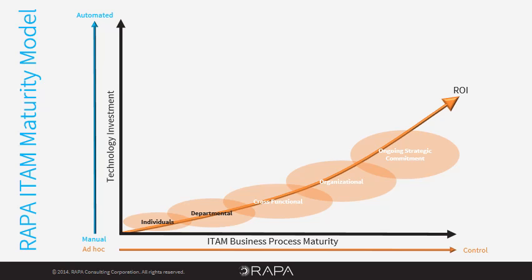We've actually already touched on four of the five fundamental ITAM success factors: people, process, technology, and organizational commitment. The fifth — data — is one of the themes that will run through the rest of the slides we're working on today. ITAM is fundamentally about data, and if data is not accurate it is of little value.